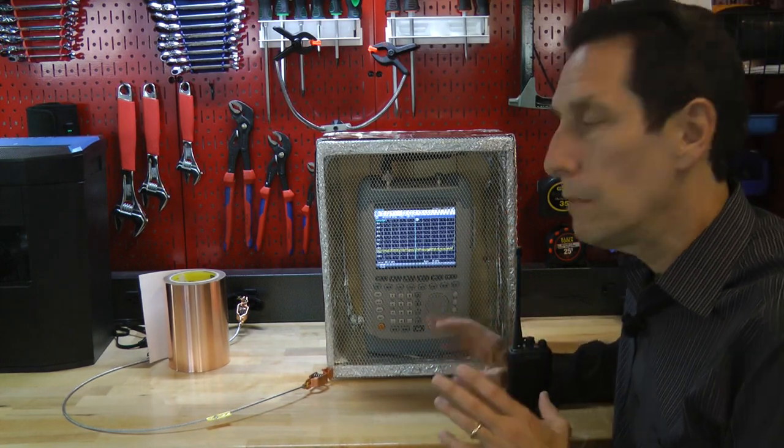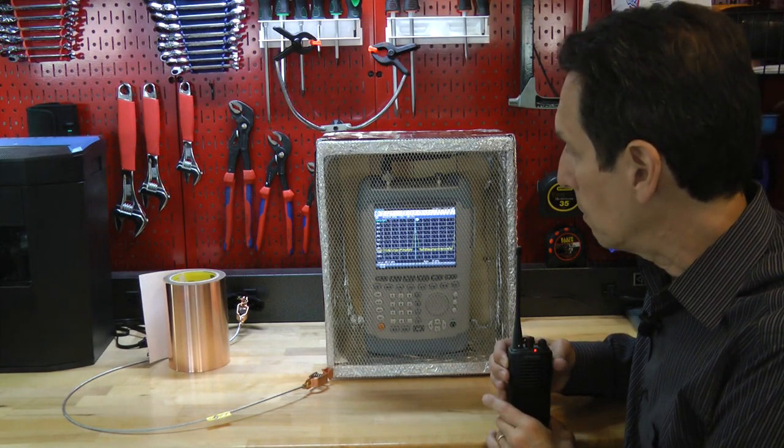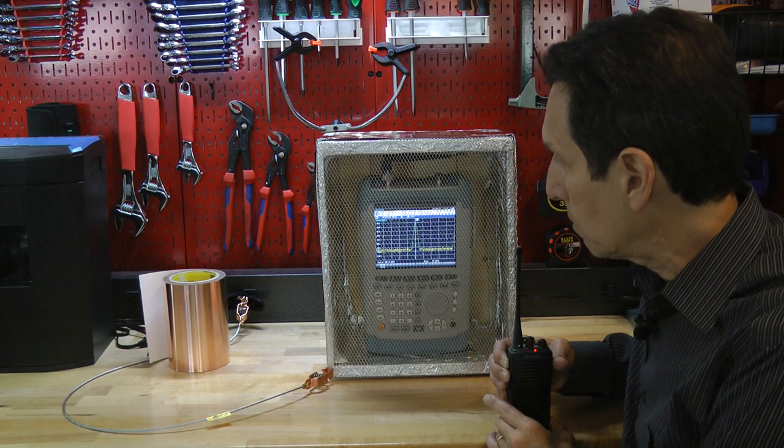What we're doing is we're just trying to measure the effects of grounding. And what we saw is that with the ground cable attached, I'll go ahead and turn it on. We ended up with a value of about minus 86 or so dBm.